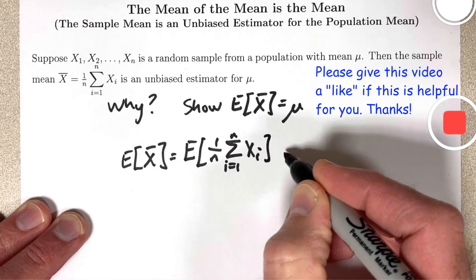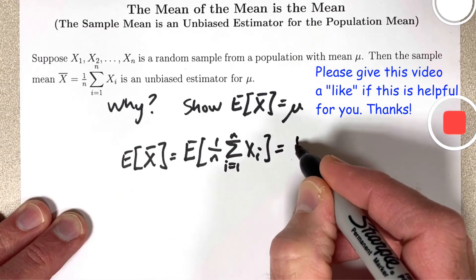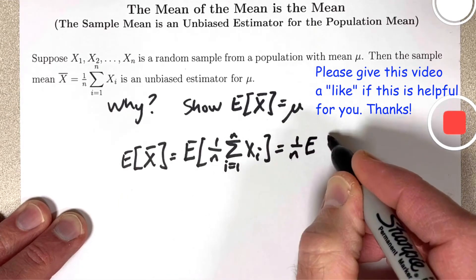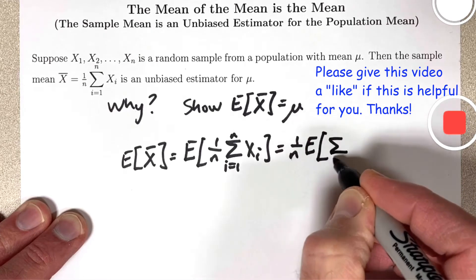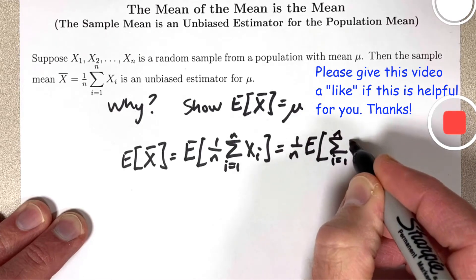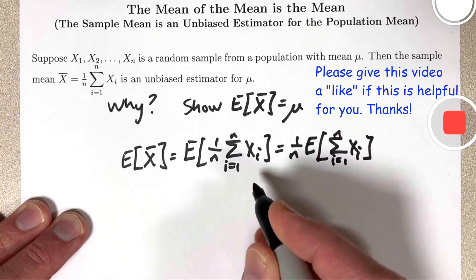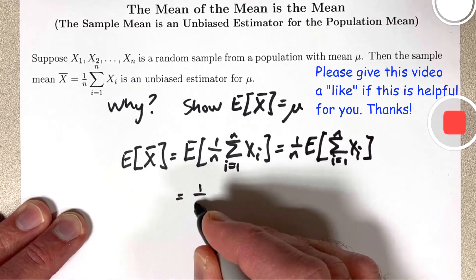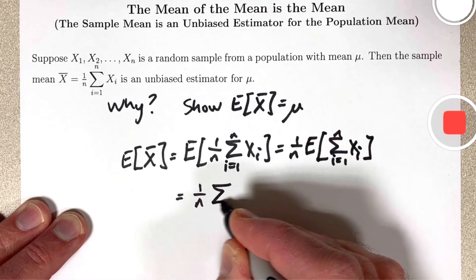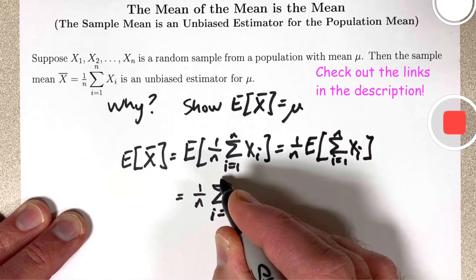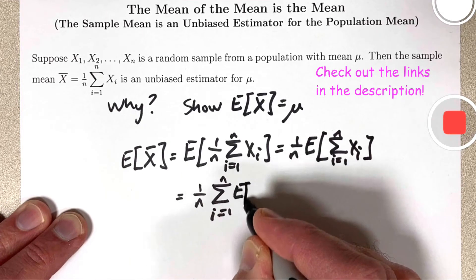By linearity, I can first factor out the 1 over n in front of the expected value operator. And then, also by linearity, I can essentially pull the summation sign out in front and get 1 over n times the summation i goes from 1 to n of the expected value of xi.